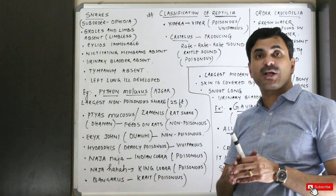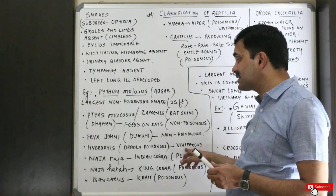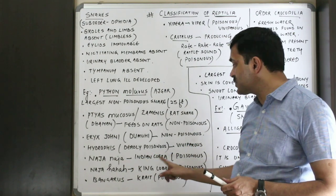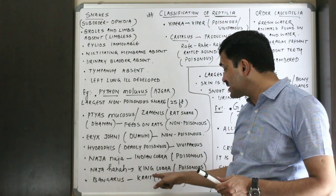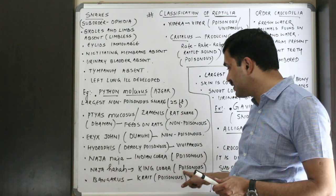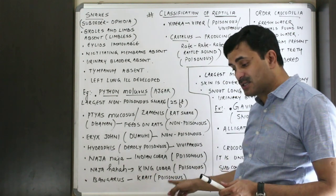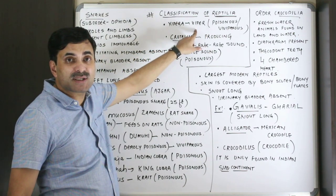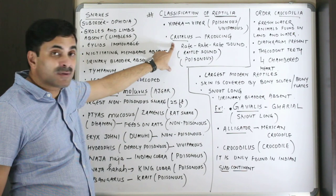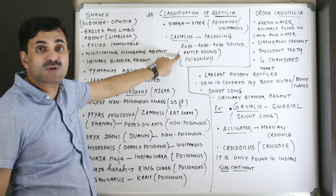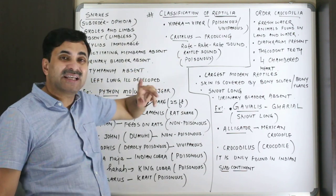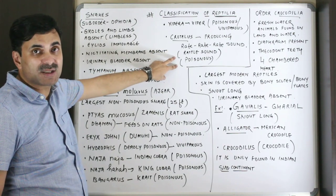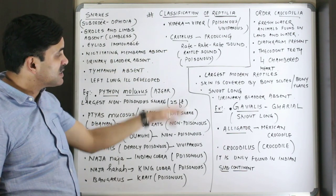Hydrophis is a deadly poisonous snake found in aquatic — particularly marine — environments and is viviparous. Naja naja is the Indian cobra, very poisonous. Naja hannah is the king cobra, also highly poisonous. Bungarus is called the krait, also deadly poisonous. Vipera is a viviparous poisonous snake also known as the viper. Crotalus is called the rattlesnake because it produces a rattling sound, and is also very poisonous.